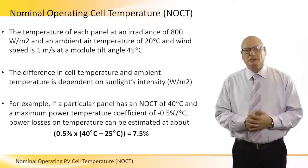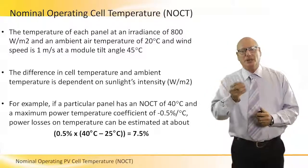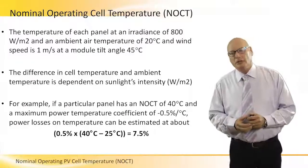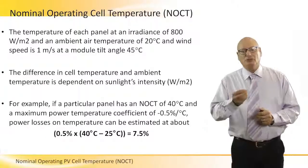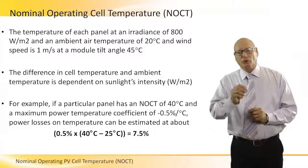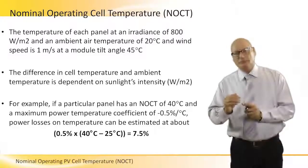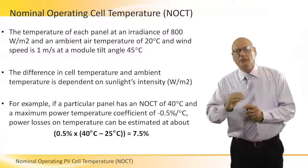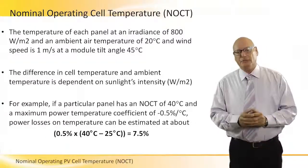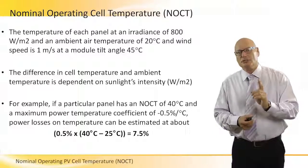Let's take an example. If a particular panel has a NOCT of 40°C and a maximum power temperature coefficient of minus 0.5% per degree centigrade, the power losses due to temperature can be estimated using this formula: 0.5% times the difference between the 25°C reference and the actual temperature. The difference is 15, so 15 times 0.5 gives a 7.5% loss because of temperature.